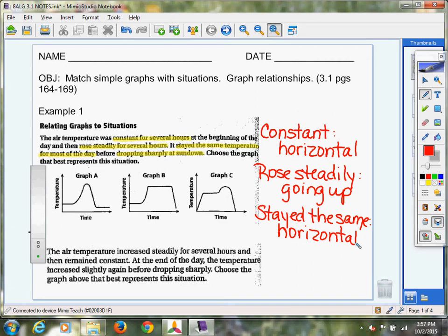And then dropping sharply. So I'm glad they said dropping, but dropping sharply connotes something a little bit more extreme. So it's more than just going down, it's going down quickly. Whenever you see that, that sharp drop means it's happening really fast.